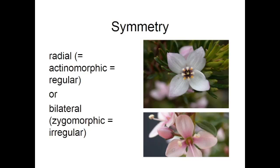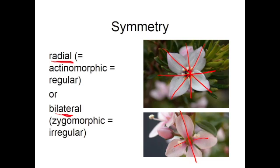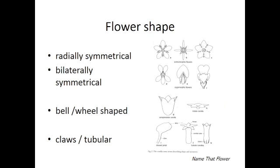We always think of flowers as being radially symmetrical, as in this beautiful Boronia flower — you can divide it down any of these axes and get equal halves. This is called a radial flower. But in some families, such as the Scrophulariaceae, or Plantaginaceae as it is now, as in this lovely Veronica, you can only divide it in one way and get two equal halves. This is called bilateral symmetry, or a bilateral flower. This illustration shows a range of those radial and bilateral flower shapes.